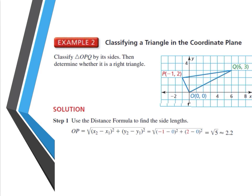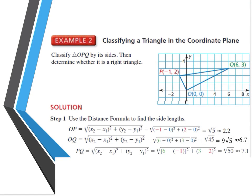Now find the lengths of the other two sides using the distance formula. The length of OQ comes out to be the square root of 45, which is approximately 6.7. The length of PQ is the square root of 50, approximately 7.1. Since none of the lengths are the same, we can conclude it is a scalene triangle.